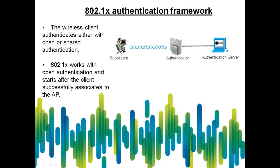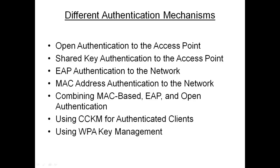802.1X works with open authentication and starts after the client successfully associates to the access point. Once the client is authenticated using open authentication, other authentication mechanisms come into picture — for example, different flavors of EAP authentication, MAC authentication, etc. We will use basic authentication as open authentication with Wired Equivalent Privacy, that is WEP encryption.